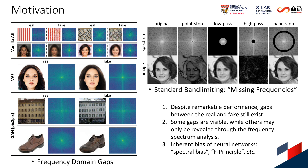By performing standard band-limiting operations, we simulate the effects of missing frequencies and observe that the losses of different regions on the spectrum correspond to different artifacts on the image. We deduce that compensating for these losses may reduce artifacts and ameliorate image quality further.